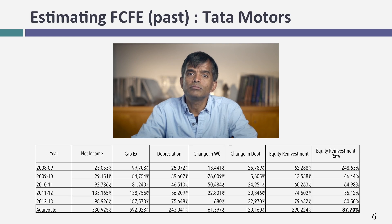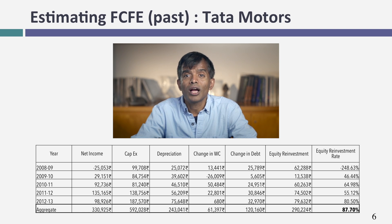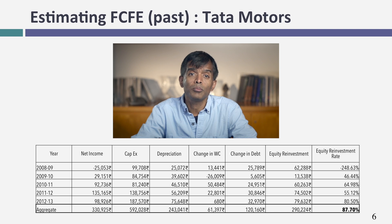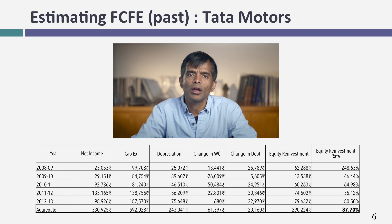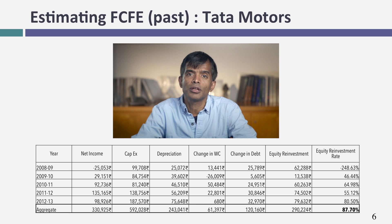With Tata Motors, I did the more conventional free cash flow to equity valuation. I started with net income, subtracted out capex, added back depreciation, subtracted the change in working capital, took the net debt cash flow, and came up with a free cash flow to equity each year. Based on my estimates across five years, the average equity reinvestment rate is about 88% — meaning for every $100 in net income coming in, they're putting back $88 into the business. This tells me that Tata Motors' potential dividend was a small number because they were so actively reinvesting back into the business.